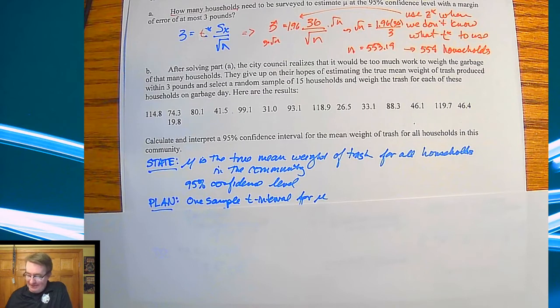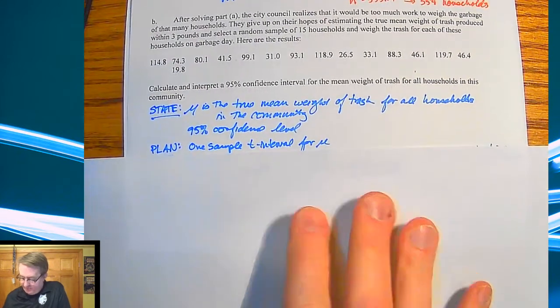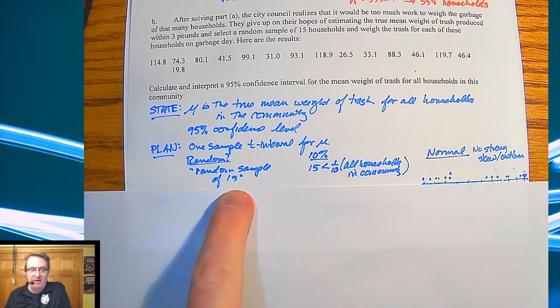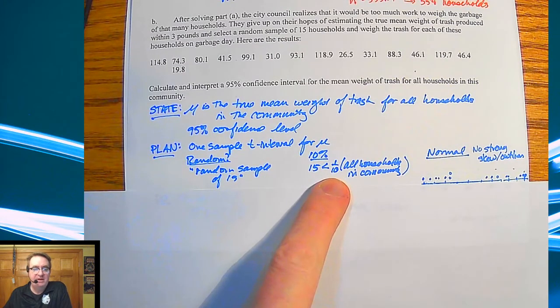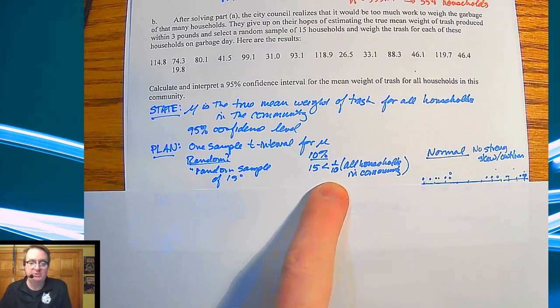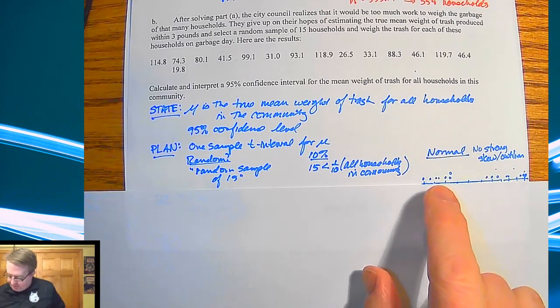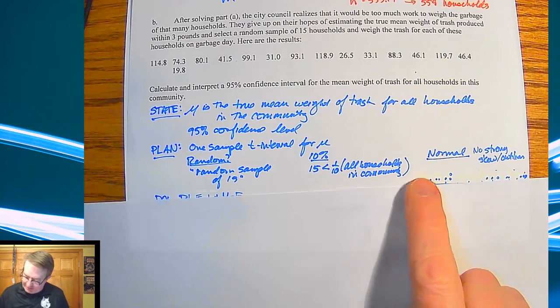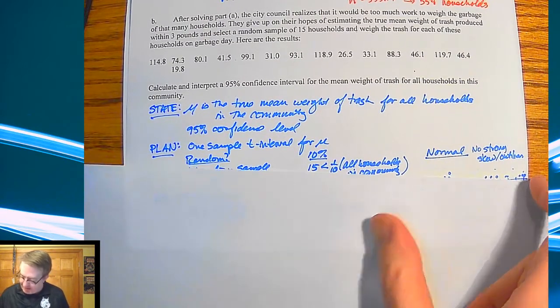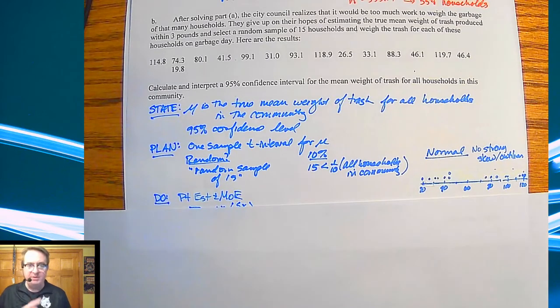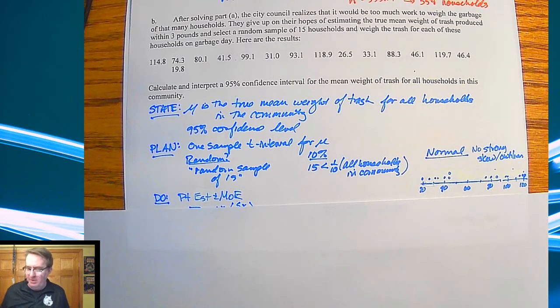So state: mean is the true mean weight of trash for all households in the community. We're doing this at a 95% confidence level. Plan: we're going to do a one sample T interval for mu. Random: it says it's a random sample of 15. 10% rule: 15 is definitely less than one tenth of all households in the community. And for normal, there's no strong skew or outliers. Notice it's pretty evenly distributed across here. Even though these are kind of spread out, we only have two that are relatively close on top of each other, so we can go ahead and treat it as normal.